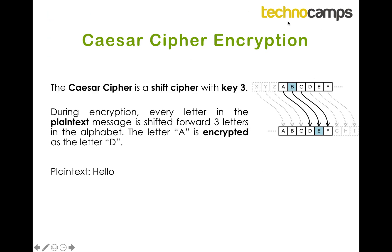So let's look at encryption first. The Caesar cipher is a shift cipher with a key of three, so during encryption every letter in the plain text message is going to be shifted forward three spaces in the alphabet. So the letter A will be shifted forward one, two, three spaces to the letter D — you can follow the lines.